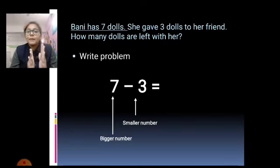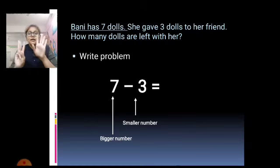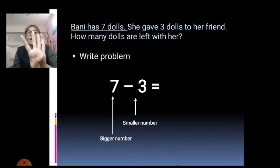Bigger number minus smaller number. So, 7 minus 3. 7 finger po open kerna hai. 5 and 2. 7. Usme se kitni remove karna hai? 3. 1 and 2 and 3. How many remains? It is a 4.